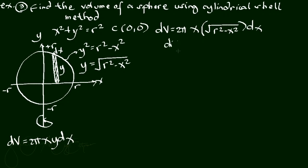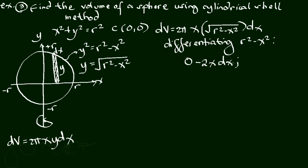Let us differentiate r squared minus x squared. Since r squared is constant, its derivative is 0. Differentiating x squared gives 2x dx, so the differential of (r squared minus x squared) is negative 2x dx.